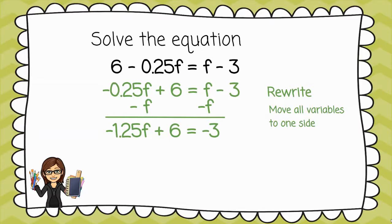Let me explain where I got the negative 1.25. You see the negative 0.25f and then I subtracted a whole f. So, I want to think of that as negative 0.25f minus 1f. That's how I got the negative 1.25f.